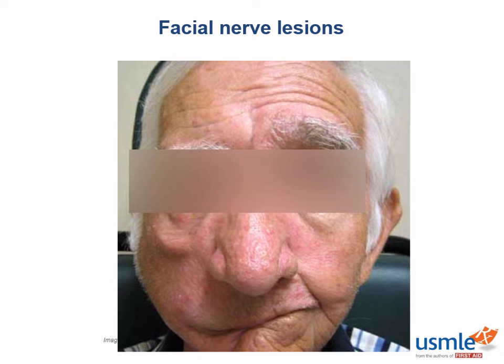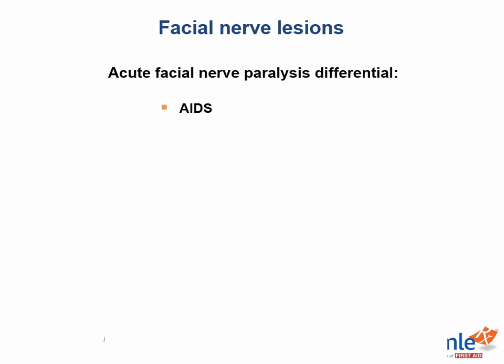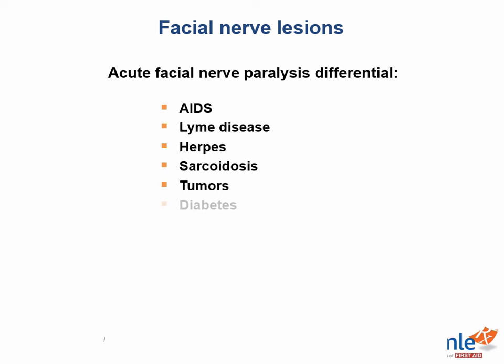There is a broad differential for acute facial nerve paralysis, which includes AIDS, Lyme disease, herpes, sarcoidosis, tumors, and diabetes. However, if the paralysis is idiopathic, then you would call it Bell's palsy, which is actually the most common cause.